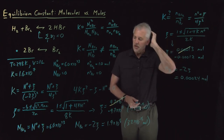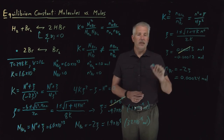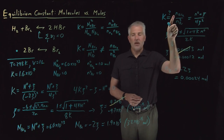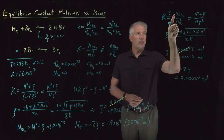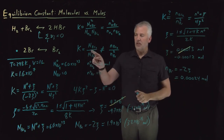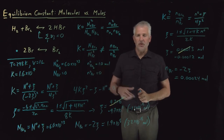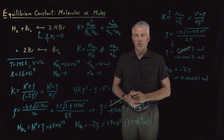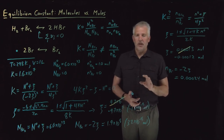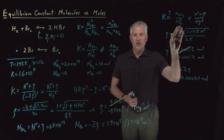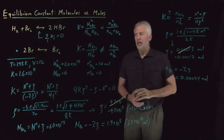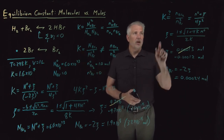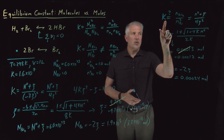This example illustrates that we can't, in many cases, write the equilibrium constant directly in terms of moles of products and moles of reactants. To be correct, we need to use molecules. However, there is a way to rescue things: if we change our understanding of what the equilibrium constant is, we can still work in moles. The next step will be to discuss what change we'd need to make to the equilibrium constant to allow us to use moles rather than molecules.